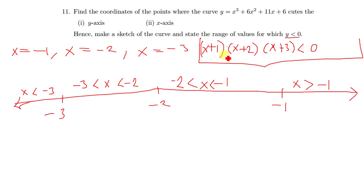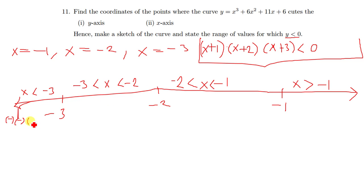Now we begin to test the points. Let's get any number less than negative 3 — we can use negative 4. Negative 4 plus 1 gives negative 3, so the sign is negative. Negative 4 plus 2 gives negative 2, also negative. Negative 4 plus 3 gives negative 1, also negative. When you multiply negative times negative times negative, you get a negative result. Is a negative number less than 0? Yes. So this part is accepted.